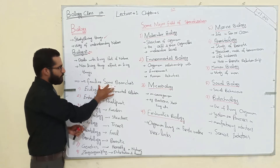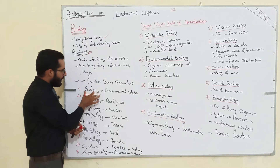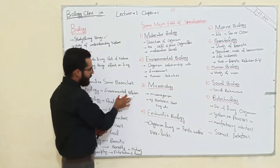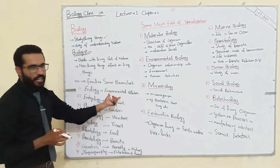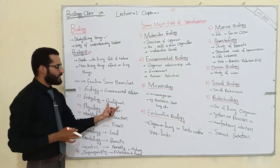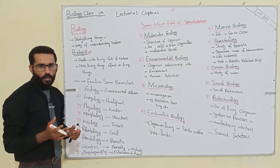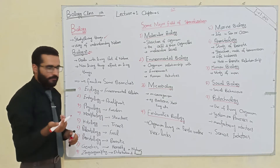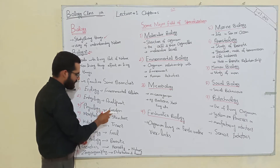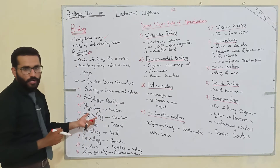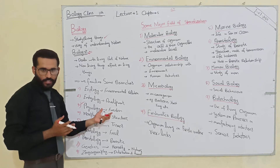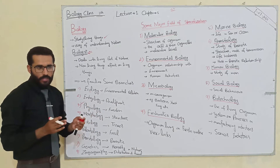Some branches of Biology: Ecology deals with the study of the environmental relationship between organisms and their environment. Embryology deals with the study of the development of an embryo into a complete organism. Physiology deals with understanding the function and structure of different parts of the physical organism.